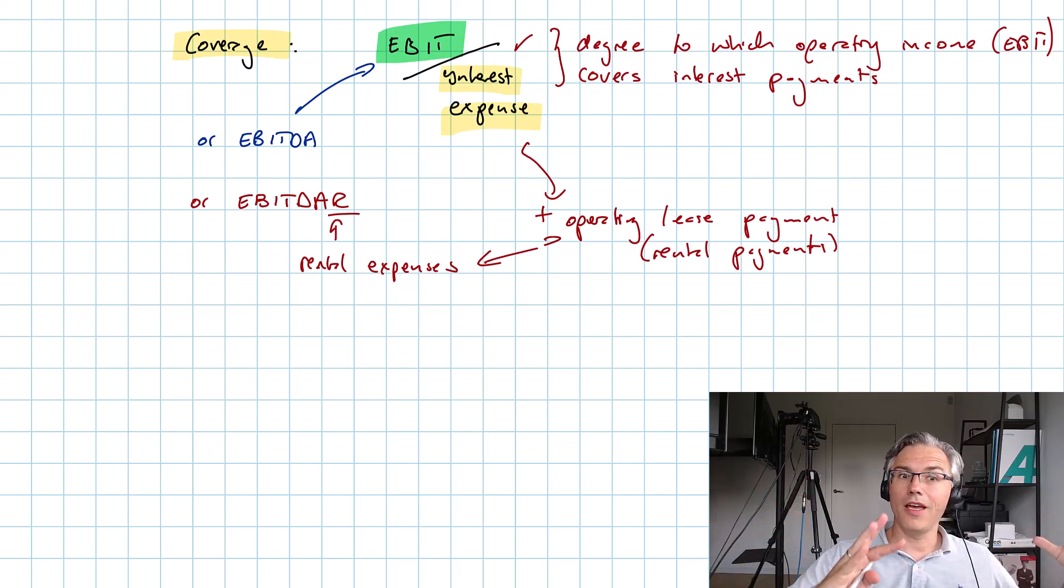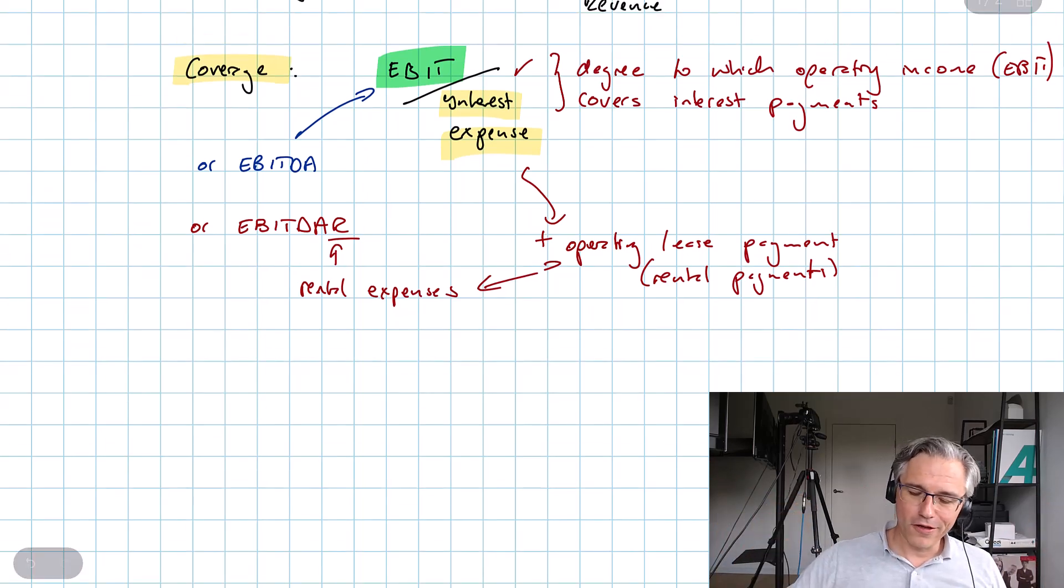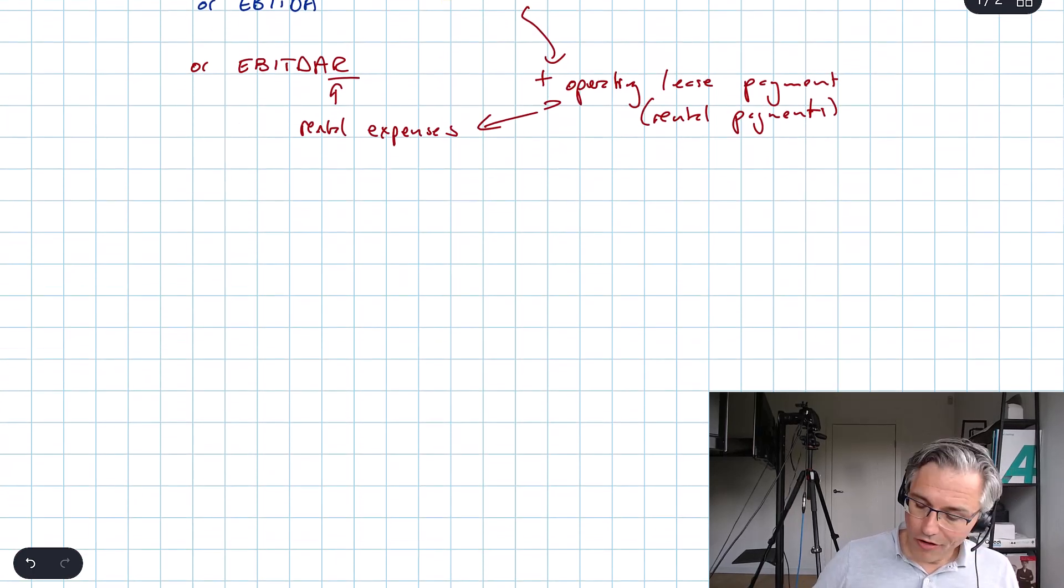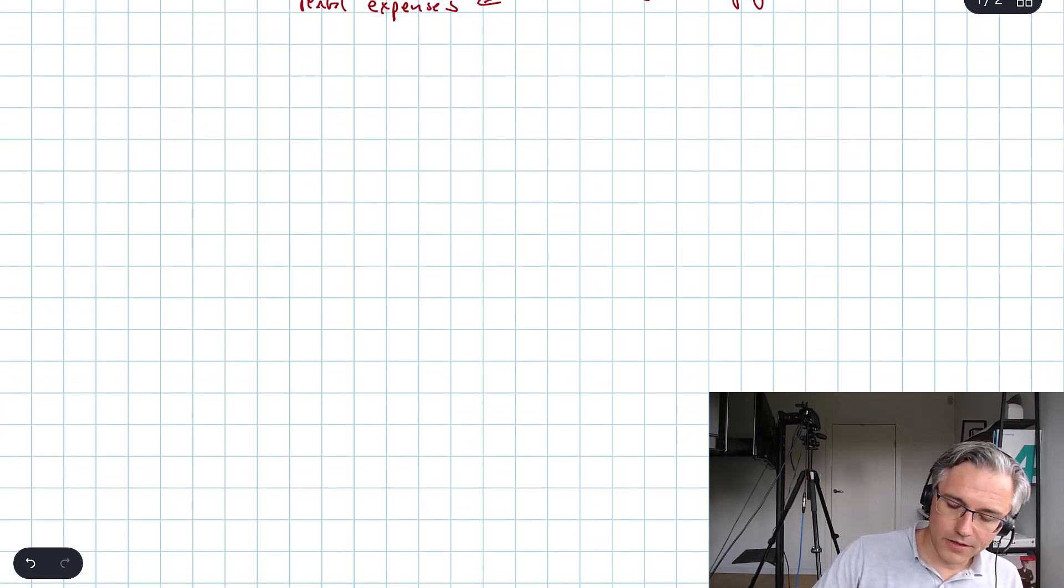So the way this gets tested, at least in the end of chapter questions, is just match the ratio with the appropriate group of ratios, either profitability, coverage, or the third and final one, leverage.